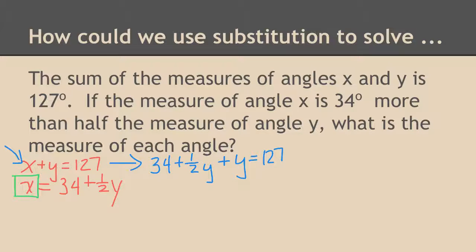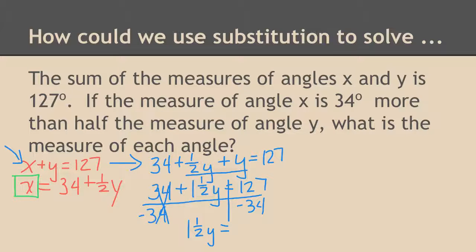I don't have to distribute, but I do have to combine some like terms. So I have 34 plus one and a half y's equals 127. Now I have a two-step equation. My first step, I'm going to take 34 off of both sides. That leaves me with one and a half y's on one side and 93 on the other. My second step, I'm going to divide by one and a half both sides. That will leave me y equals 62 degrees.